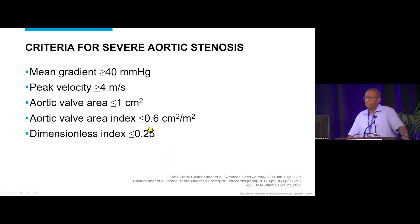The criteria for severe aortic valve stenosis are: a peak velocity of 4 meters per second, which typically corresponds to a mean gradient of 40 millimeters of mercury — velocity of 4 and a gradient of 40.